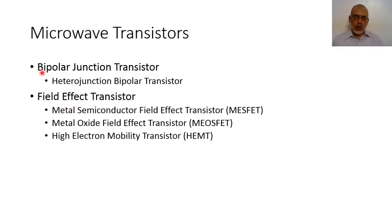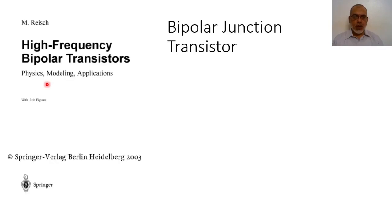So we have three types of field effect transistors and bipolar junction transistors with the specific type, the heterojunction bipolar transistor. In this video and in the following videos we are going to discuss briefly these types of microwave transistors, beginning with the bipolar junction transistor.